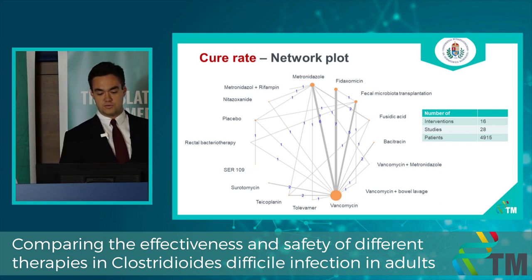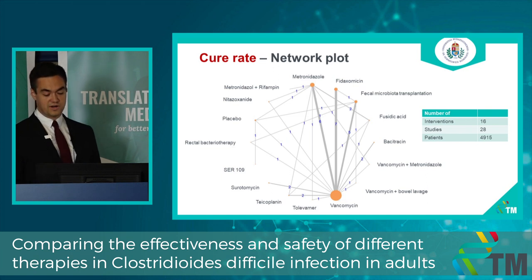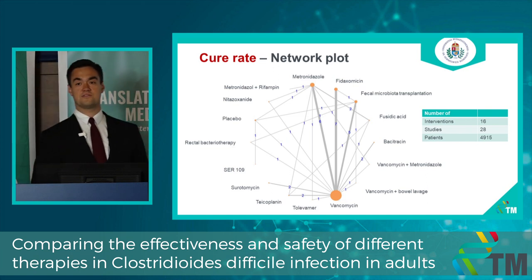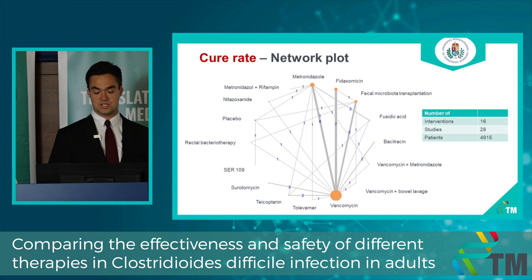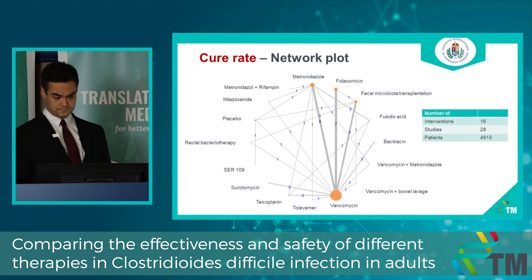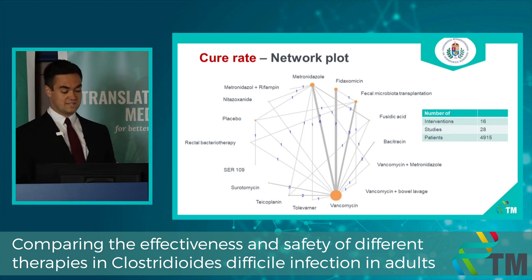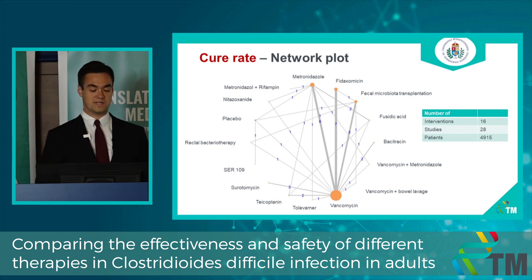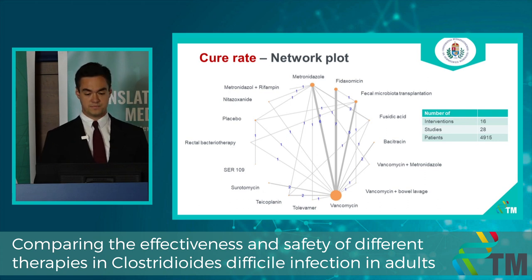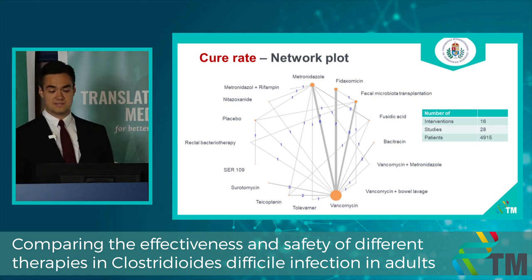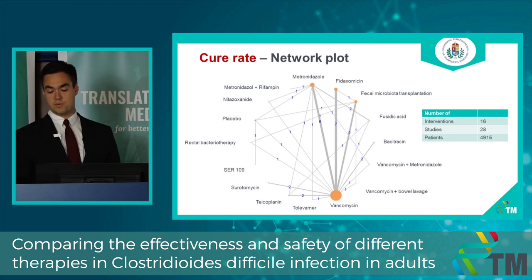In this network plot, you can see knots and edges. Every knot represents a different kind of therapy against C. diff infection. Next to the knot, you can see the name of the possible treatments. The bigger knot represents that that treatment was included in more articles than others — you can see vancomycin was included in the most articles in our analysis. Every edge shows a comparison among different kinds of treatments, and the number above it shows how many articles included that comparison.